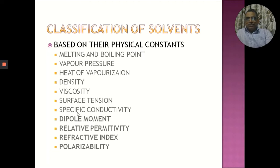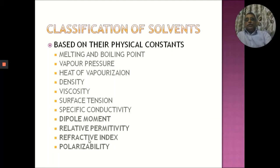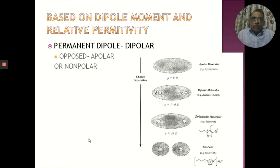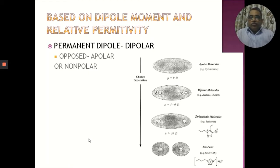In this session, we will look at important physical constant parameters: dipole moment, relative permittivity, refractive index, and polarizability. We will use these to understand the interaction and influence of the solvent on fluorescent molecules and light-absorbing molecules. For molecules with permanent dipoles, based on dipole moments and relative permittivity, we can understand the interactions and classify the materials.